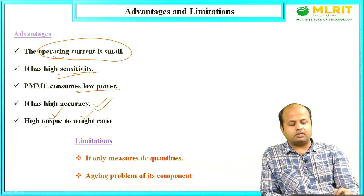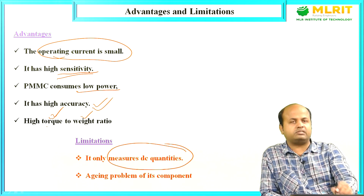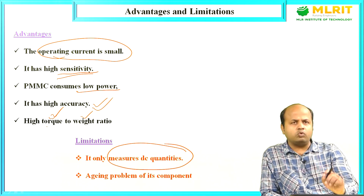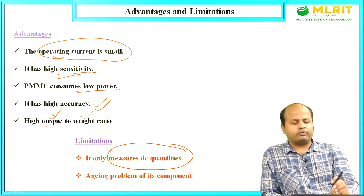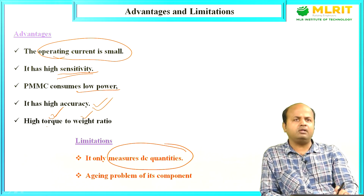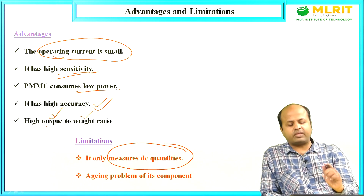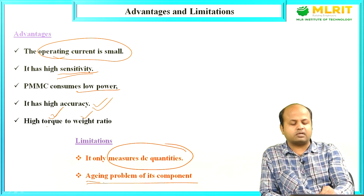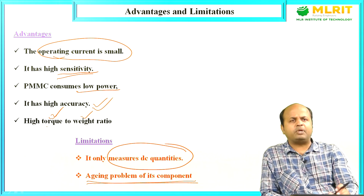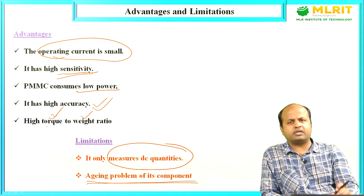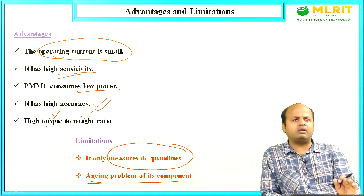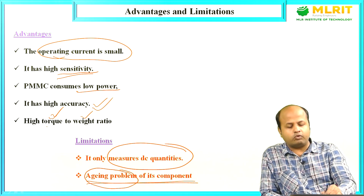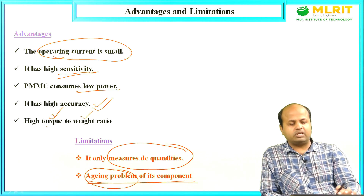The limitations of PMMC are: first, it can only measure DC quantities — there is no scope to measure AC quantities from a PMMC. Second, there is an aging problem of its components. Over time, after 2 to 4 years of use, the magnetic properties deteriorate and the spring also deteriorates, causing measurement errors.